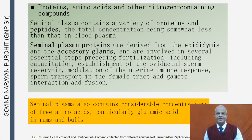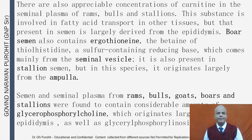Seminal plasma proteins are derived from the epididymis and accessory glands and are involved in essential steps preceding fertilization, including capacitation, establishment of the oviductal sperm reservoir, modulation of the uterine immune response, sperm transport in the female tract, and gamete interaction and fusion. Seminal plasma also contains considerable concentrations of free amino acids, particularly glutamic acid in ram and bull semen.